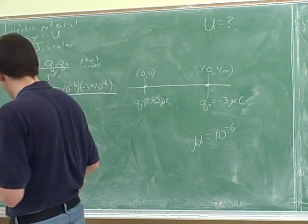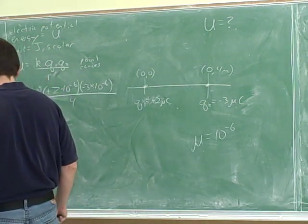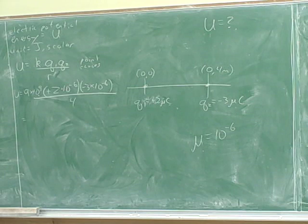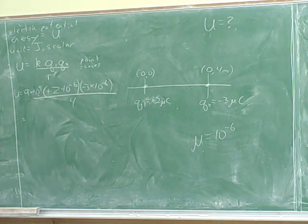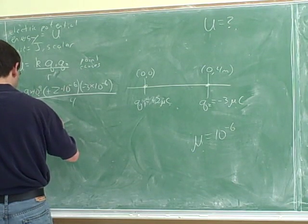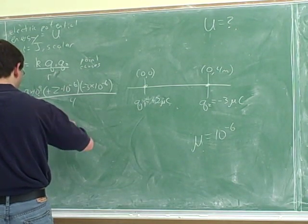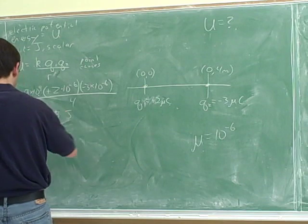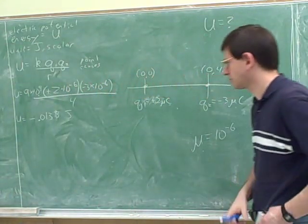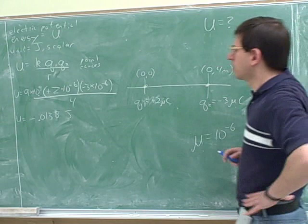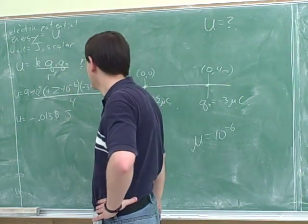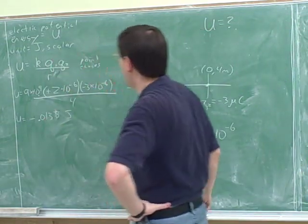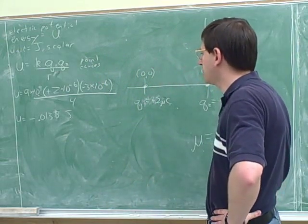Did you get that? I got negative 0.0135. Looks like I made a mistake. I think you did it correctly. Good. What units would that be in? So for this formula, we do plug in the signs. So this came out to be negative.